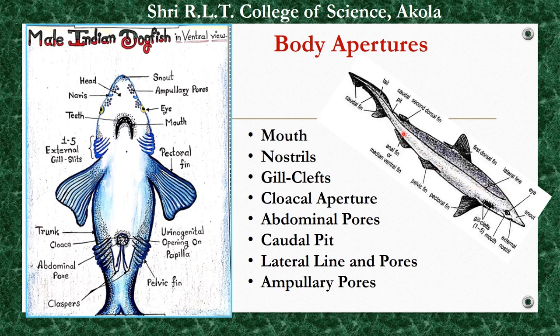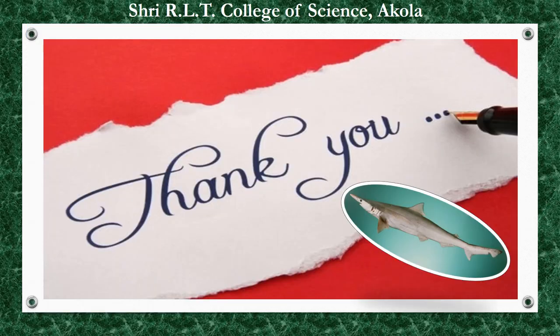The last body aperture is ampullary pores. On the head and snout, several groups of minute ampullary pores open to receptors known as ampullae of Lorenzini. When these ampullae of Lorenzini are pressed, they exude mucus. This covers all the body apertures present in Scoliodon. In this lecture, you have studied all the external features of Scoliodon. Thank you very much.